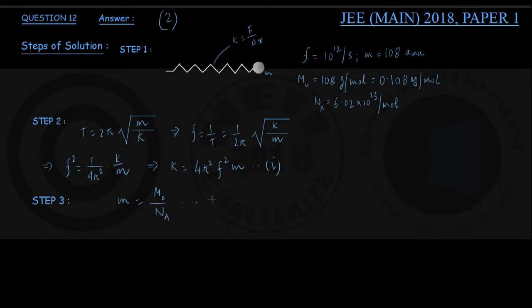That is my equation number 2, and making use of it in the next step, we can write that the force constant of the bond k equals 4 pi square into f square, substitute small m now, that is M0 by Na.